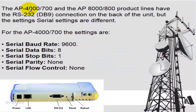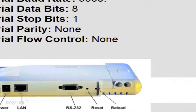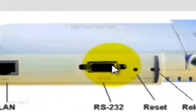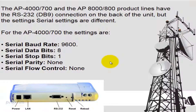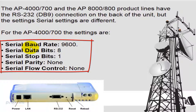We're going to get started on the AP side first. The AP4700 and the AP8800 product line both have the RS-232 DB9 connection in the back. They do differ in the serial settings themselves. On the AP4700, the baud rate is 9600, data bits is 8, stop bits is 1, parity is none, and flow control is none as well.